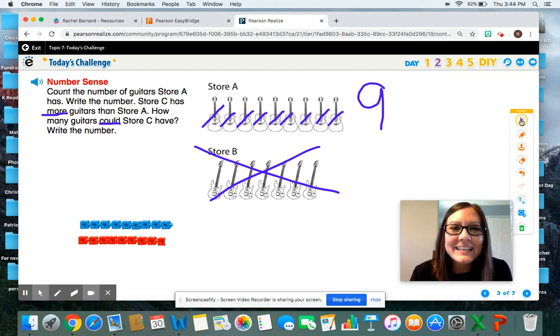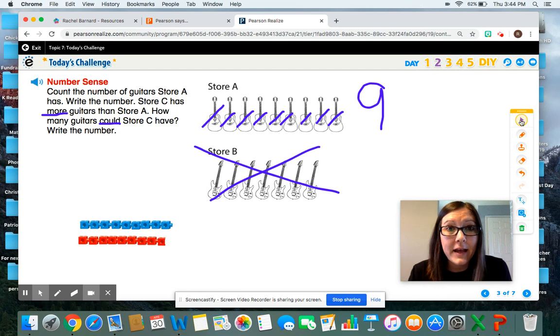Nine is equal to nine. So store C could not have nine guitars because nine is not more than nine. And it says that store C has to have more.